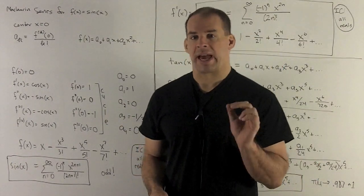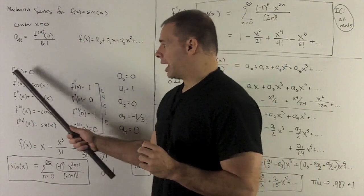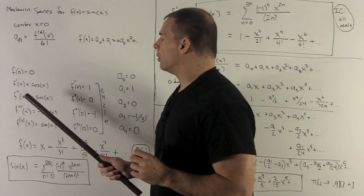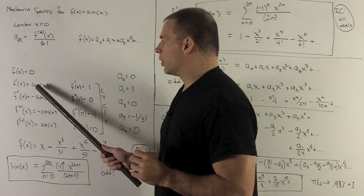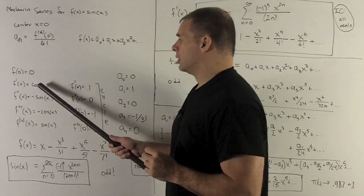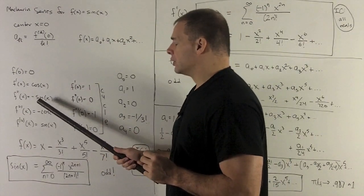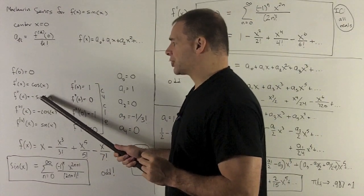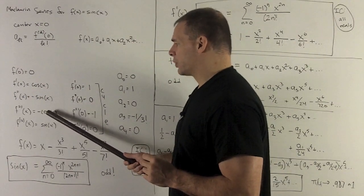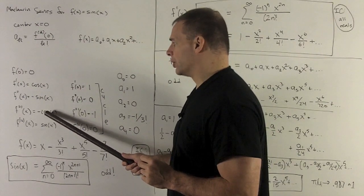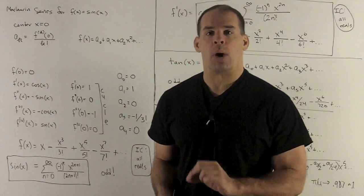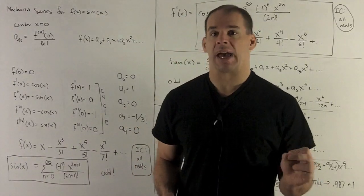Let's calculate. f of 0 is going to be 0 — sine of 0 is 0. Then I take the derivative of that and get cosine. Going through the derivatives: derivative of cosine is minus sine, derivative of minus sine is minus cosine, and derivative of minus cosine gives minus sine. After four derivatives, we wind up back where we started with sine.